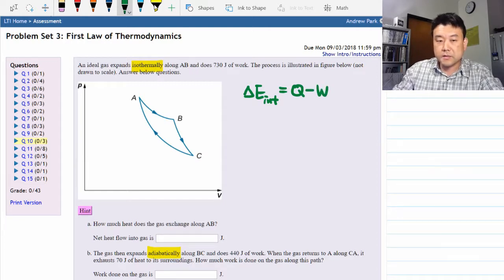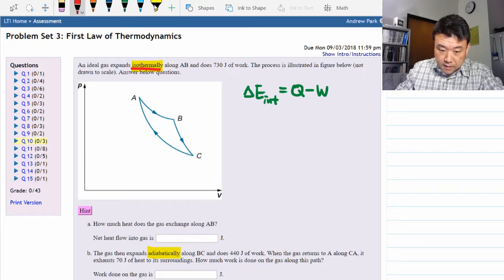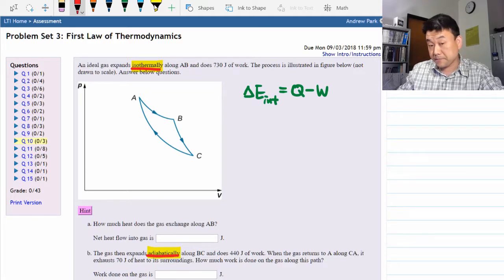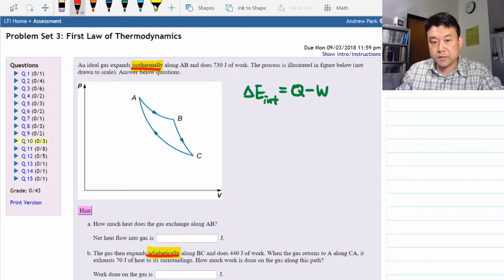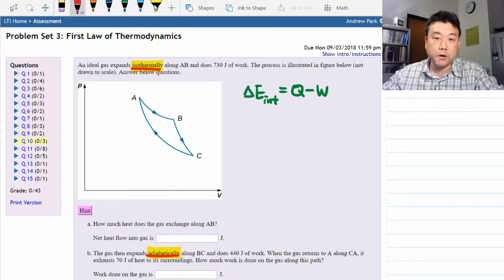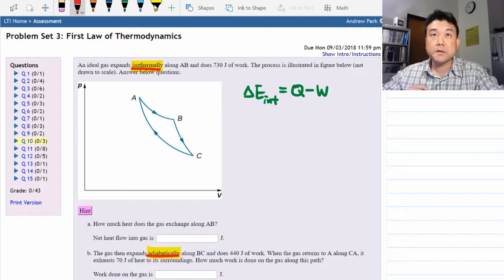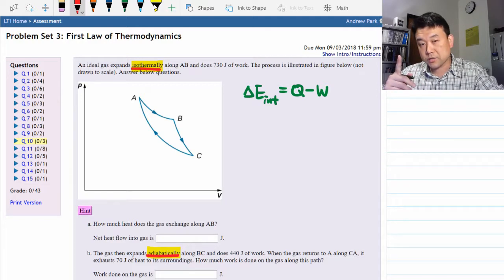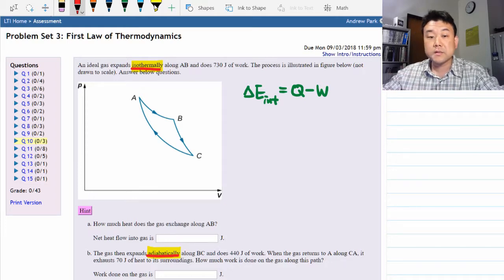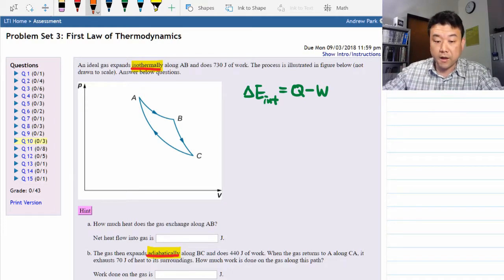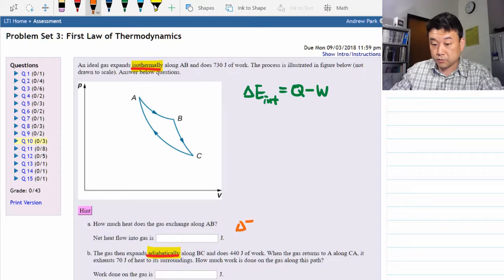This is why the phrases isothermally and adiabatically make this question easy. Each of these two phrases make one term in the first law of thermodynamics equal to zero. When we say it's doing something isothermally that means temperature is not changing and since that's related to the internal energy, the change of internal energy for part A is equal to zero.